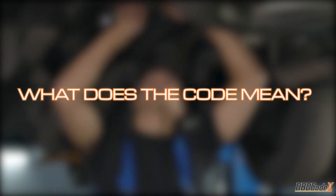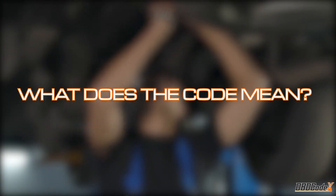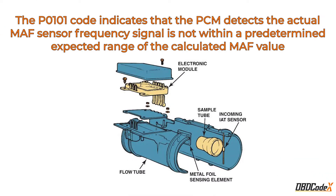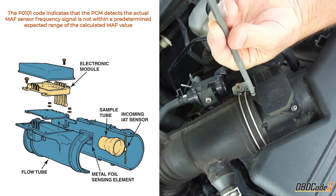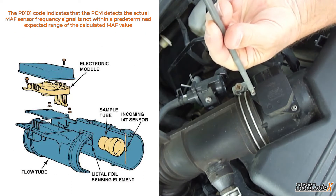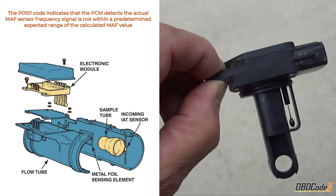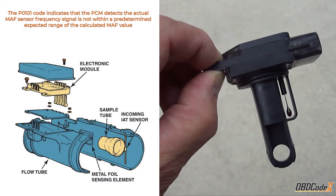What does the P0101 code mean, exactly? Well, in a nutshell, it means that your car's powertrain control module has detected that the actual mass airflow sensor frequency signal isn't within the expected range of the calculated MAF value.